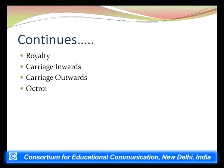Carriage inward refers to transportation expenditure incurred to bring raw material or finished goods into the premises. Carriage outward refers to transportation expenditure to send items out of the premises for sale. If it is carriage inward, it is debited in the first section (trading account); if it is carriage outward, it is debited in the second section — the profit and loss account.